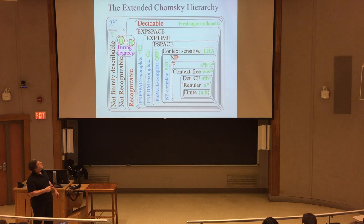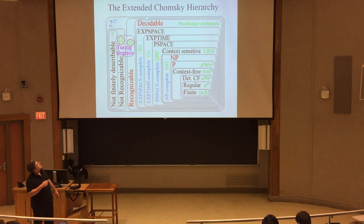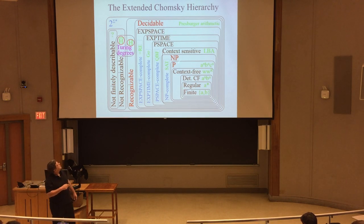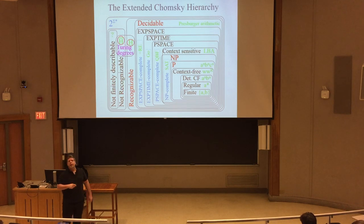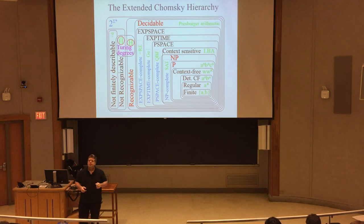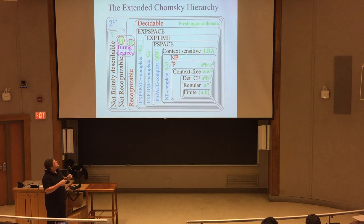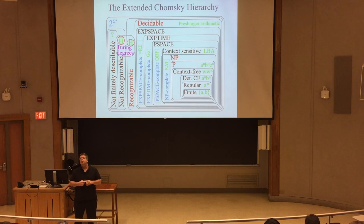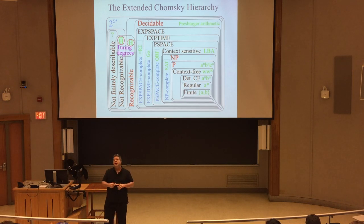So where are we going next? We're exiting the context-free languages and going into things that can be done in polynomial time, and generally things that can be decided or recognized — going up to these two red regions. Just to be sure: each oval or region in this Venn diagram — what type of object is it? Animal, mineral, vegetable, something else? It's a set.